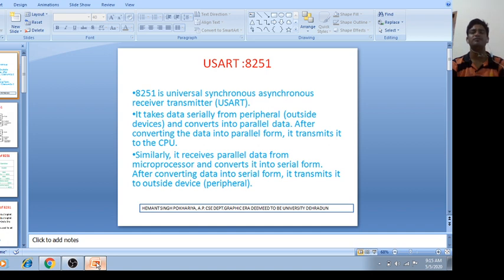For this what is needed? Microprocessor transmits data parallelly to peripheral device or outside device or it receives data parallelly from peripherals. You know you have SID and SOD pins but these two pins are used for serial data only. So 8251 works as a bridge between peripherals and microprocessors.